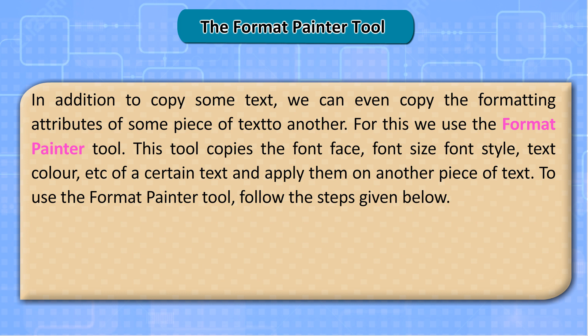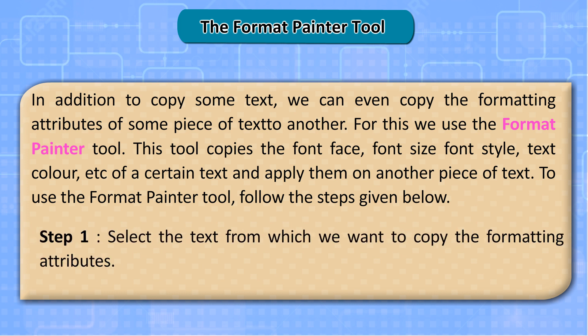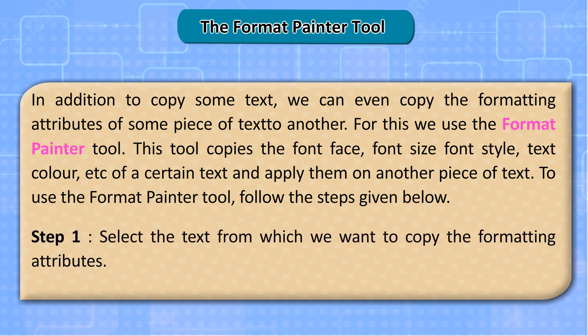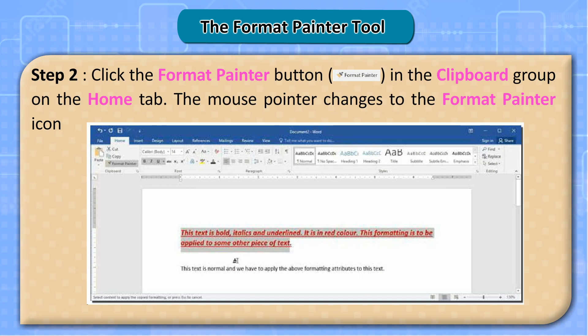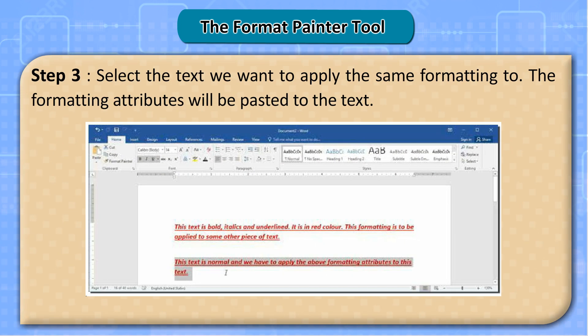To use the Format Painter Tool, follow the steps given below. Step 1: Select the text from which we want to copy the formatting attributes. Step 2: Click the Format Painter button in the Clipboard group on the Home tab. The mouse pointer changes to the Format Painter icon. Step 3: Select the text we want to apply the same formatting to. The formatting attributes will be pasted to the text.